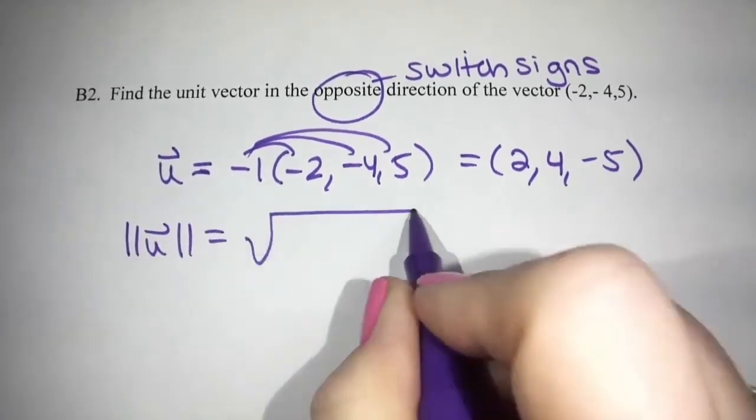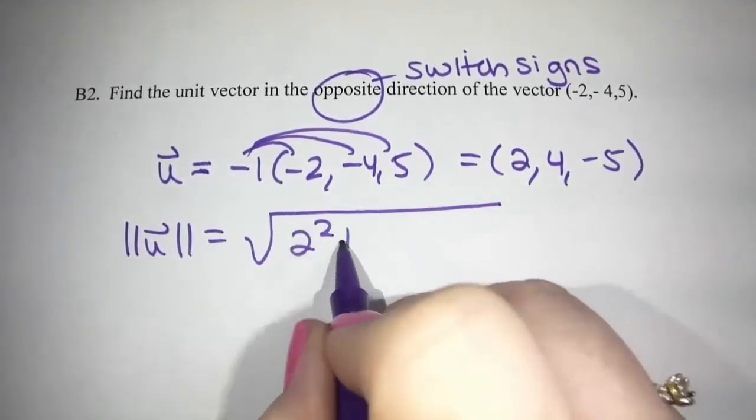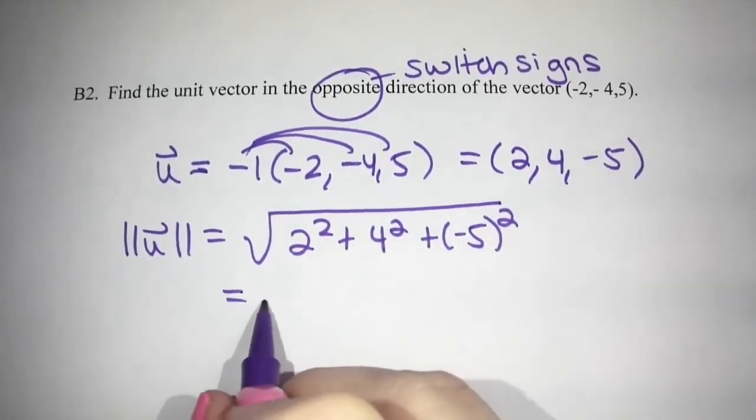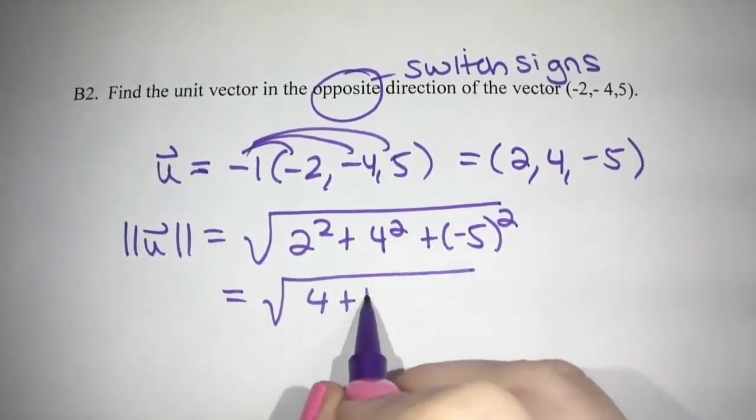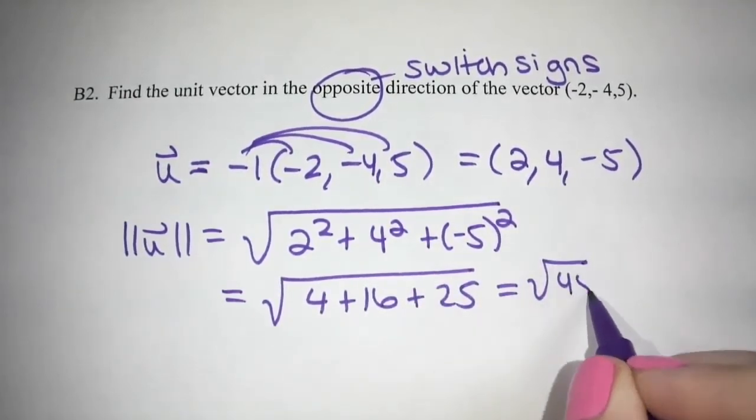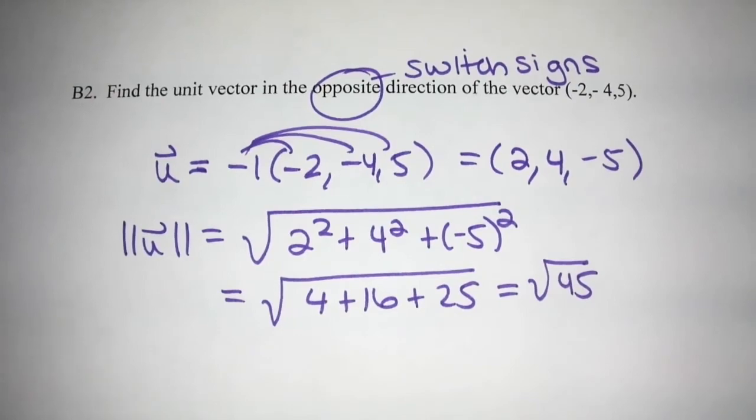So square root two squared plus four squared plus negative five squared. And so we get four plus 16 plus 25 is root 45.